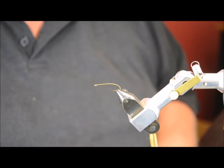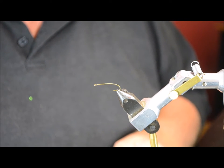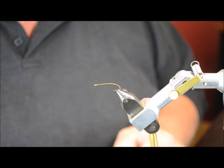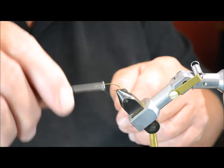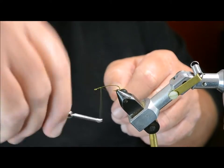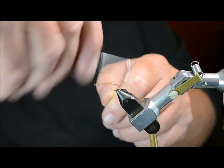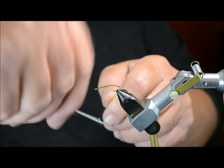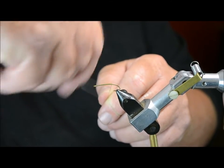Okay, today we're doing the damsel nymph. This fly's tied on a TMC 200R size 10, it also is popular on a size 12 as well. So we'll start behind the eye. This is Danville's thread six aught. Take it right down to the end by the point.